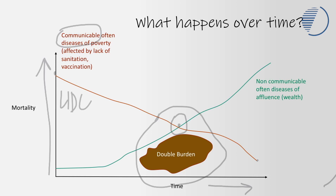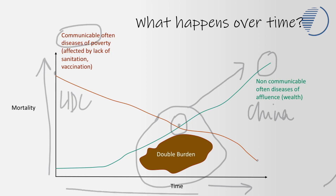Finally, many countries are moving into a position where almost all of their disease burden is from non-communicable diseases. Countries like China now have almost all mortalities arising from stroke, heart disease, and cancer. China has already gone through this transition, and the types of diseases causing the main mortality have changed over time.